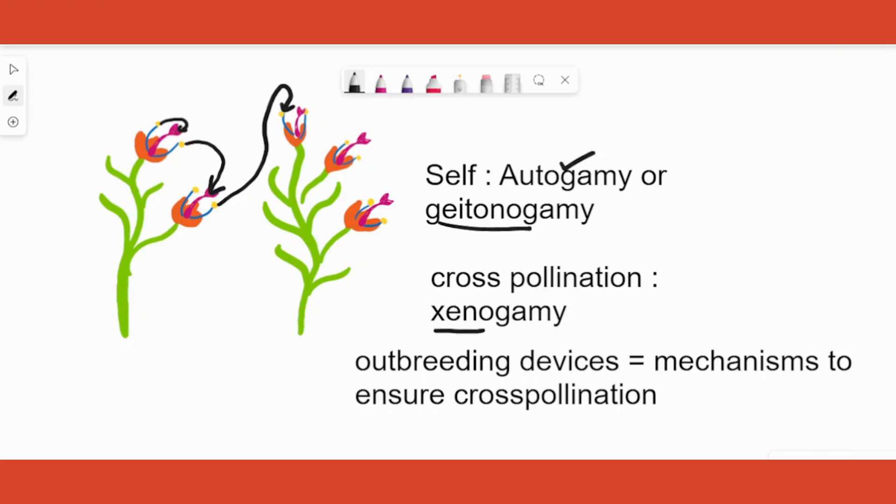We will also understand what is meant by an agent of pollination. An agent means somebody who does this work. It can be wind, it can be water, so in that case we will call that as abiotic. If it is something like a living organism, it could be human, bird, or anything that is living, we call that as biotic.